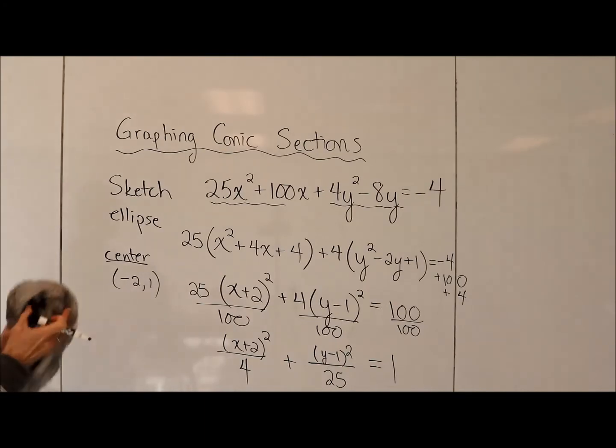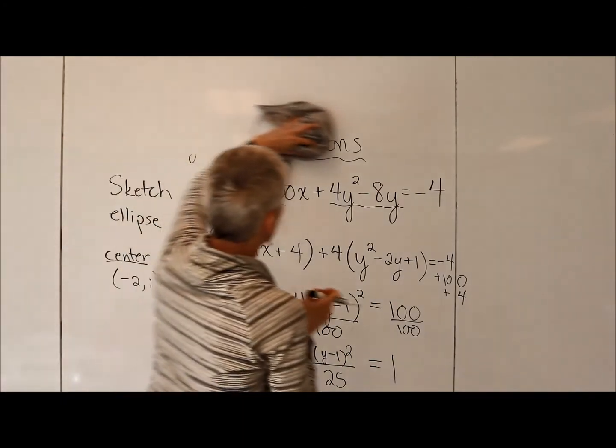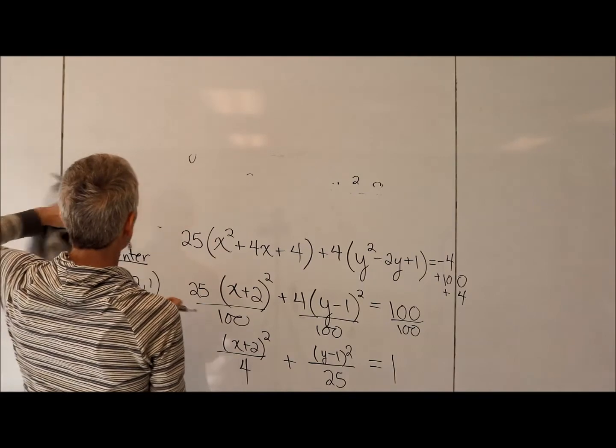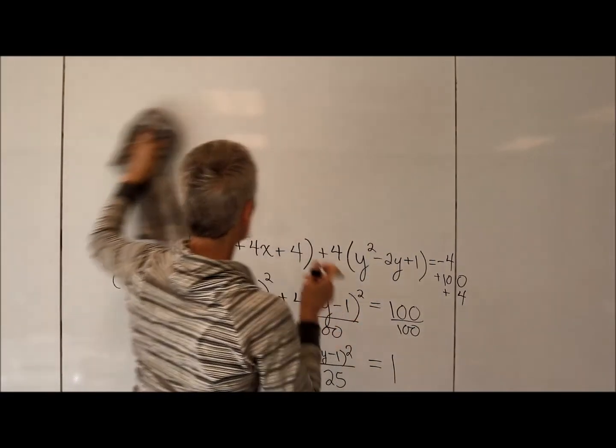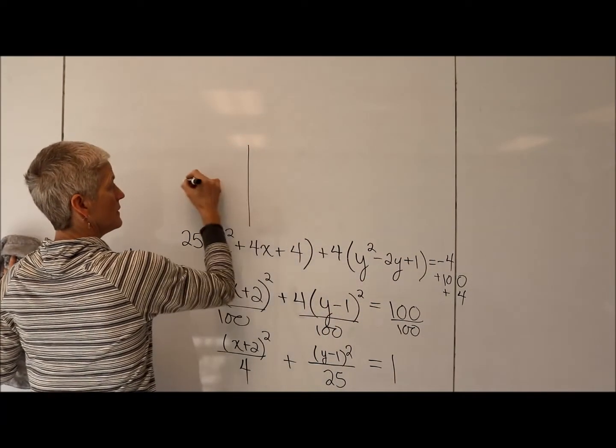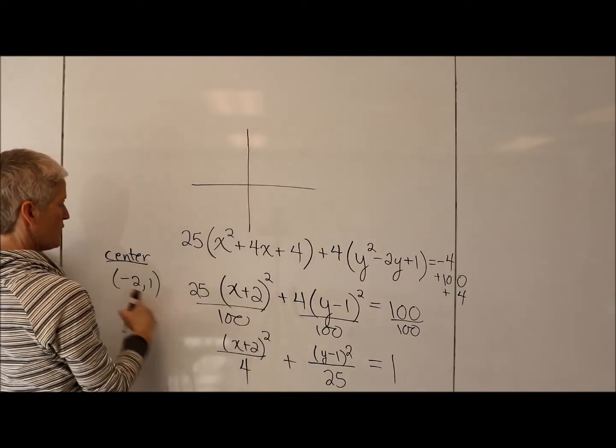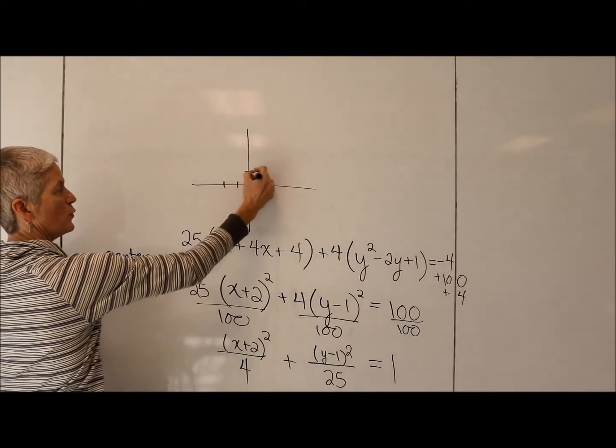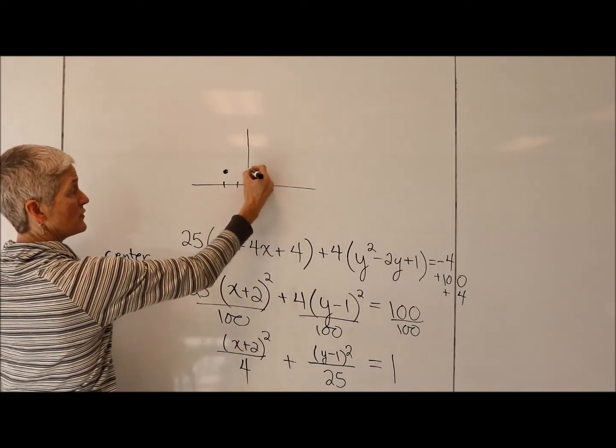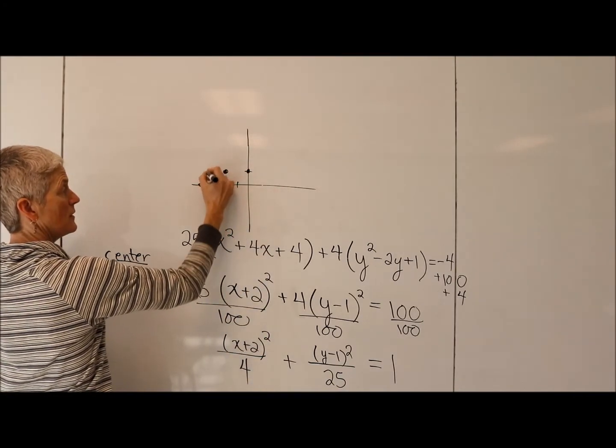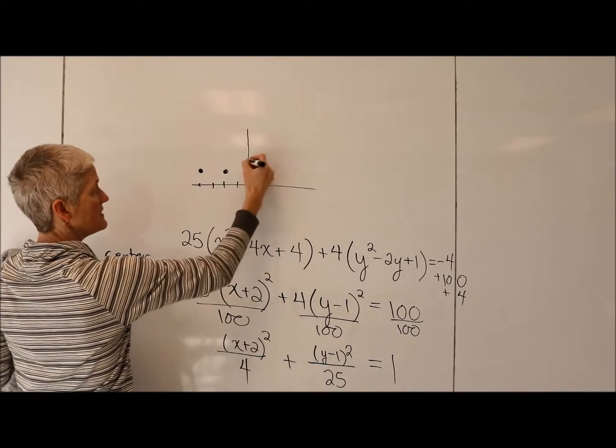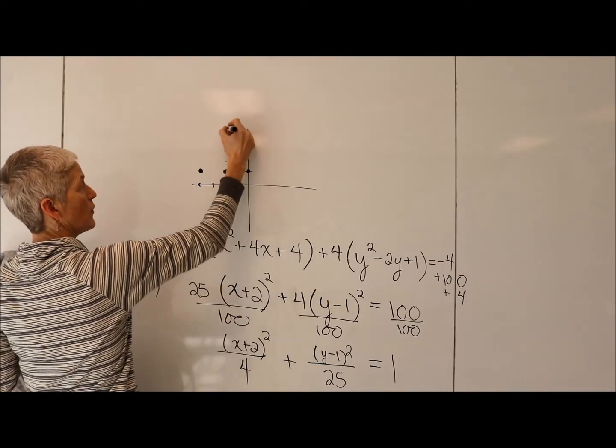Let's just sketch that right up here. I'm just going to erase the top of this. Okay. Alright, so my center is at negative 2, 1. I'm going right and left 2. And then up and down 5. 1, 2, 3, 4, 5.